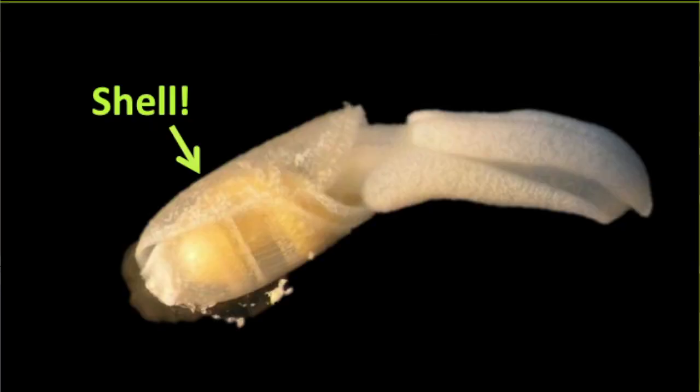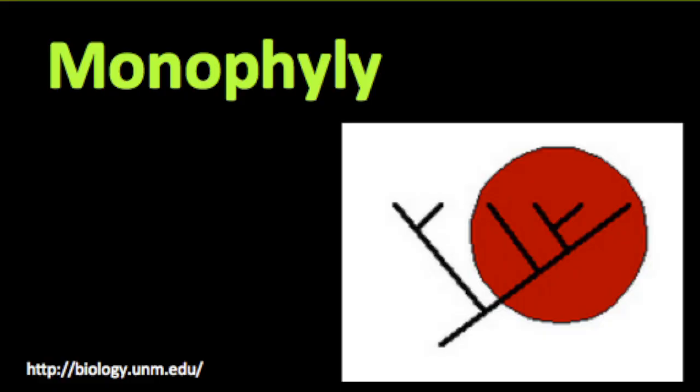Slight problem: some sea slugs have shells, but they're not snails. Or are they? In biology, when we name a group, we want the group to include every member of the group and all of the ancestors that that group shared.